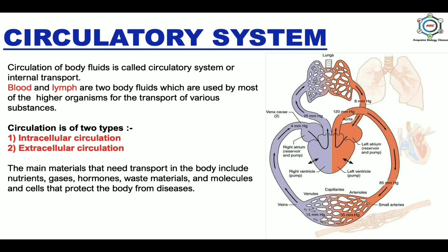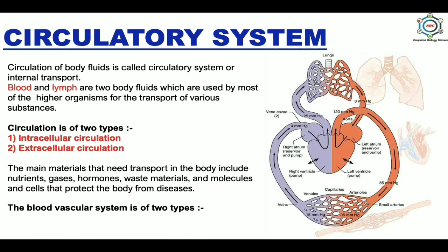The main materials transported in our bodies are nutrients, gases, hormones, waste material, and molecules and cells. The arteries and veins responsible for complete circulation form the blood vascular system, which is of two types: open circulatory system and closed circulatory system. The open circulatory system occurs in arthropods and most molluscs like snails, and the closed circulatory system is found in annelids such as Pheretima and all vertebrates like Sepia, the cuttlefish.